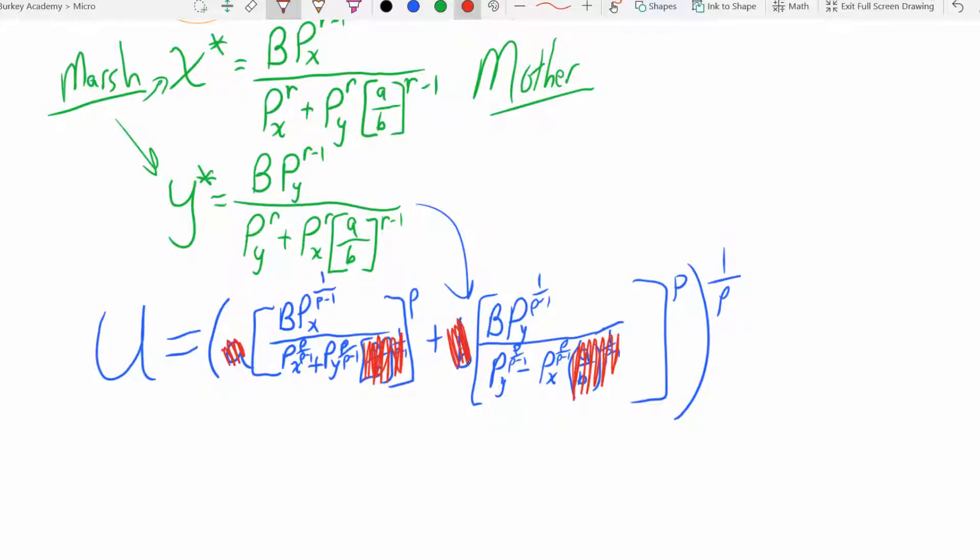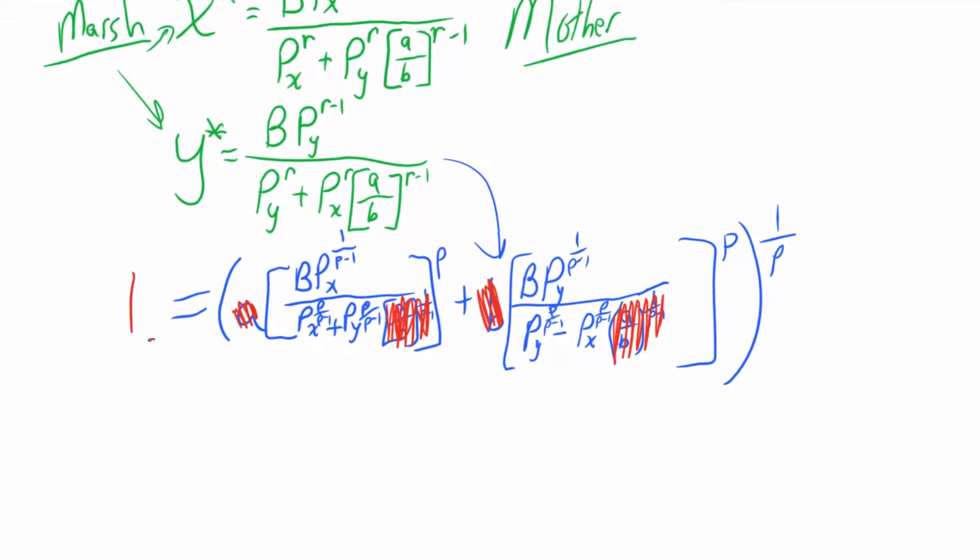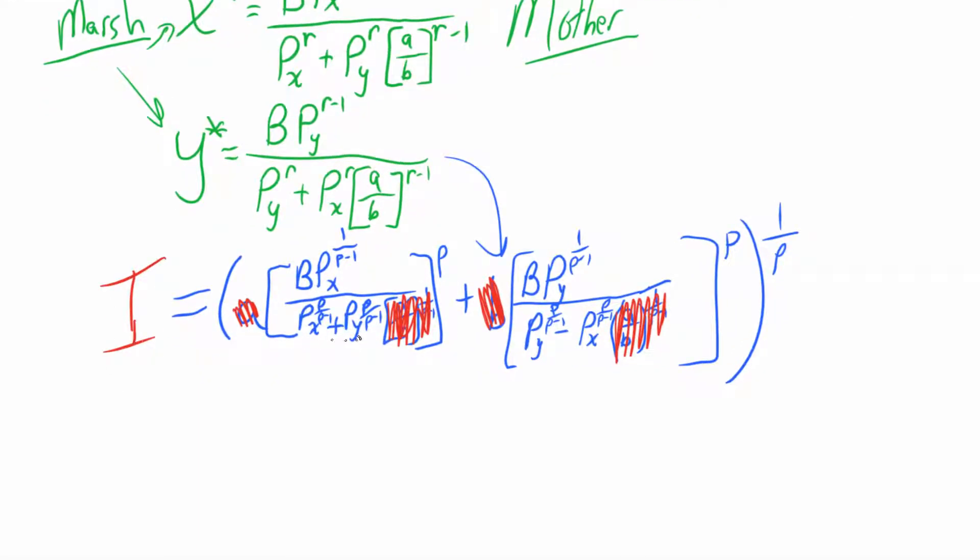Now we're going to simplify this thing. This is now our indirect utility function where all you have to do is plug in prices and budget and it tells you how much utility the person's going to get without having to go through and calculate how much x and y they're going to get and then plug it into the utility function. We've kind of done it all already here right now, but this is a bit ugly and we can simplify it pretty easy. The slog is almost over.